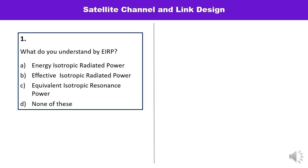First question: what do you understand by EIRP? EIRP is effective isotropic radiated power. Option B is the correct option.